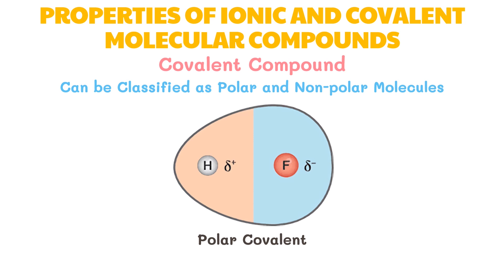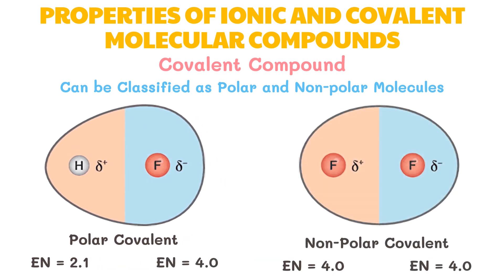For instance, in the covalent bonding between hydrogen and fluorine: fluorine has an electronegativity of 4.0 while hydrogen has an electronegativity of 2.1. Fluorine is more electronegative, so the shared electrons spend more time around the fluorine atom, creating a partial negative charge — this kind of bond is a polar covalent bond. When two identical atoms covalently bond, like two atoms of fluorine, there is equal sharing of electrons — this type of bond is a nonpolar covalent bond.